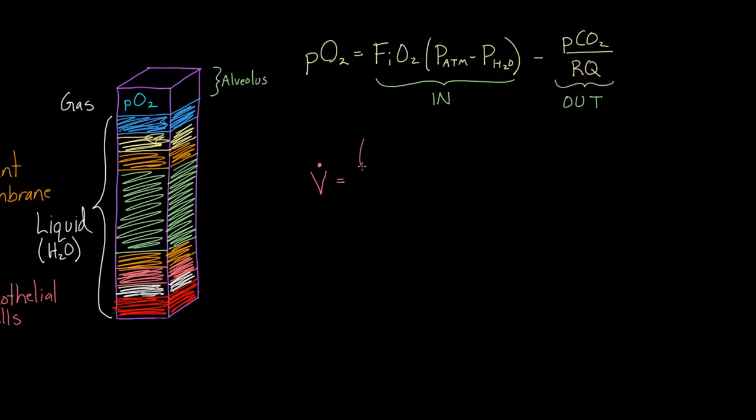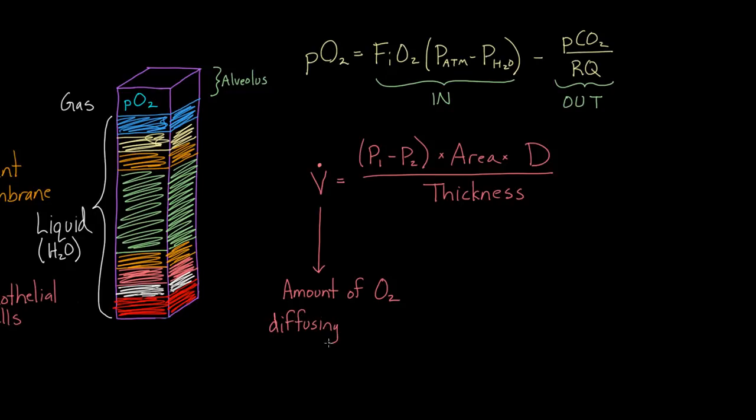We have this second equation which helps us figure out how much oxygen is going to diffuse, or any molecule really, according to this formula. This is Fick's law. We can figure it out by taking a few parameters. If you know that the gradient P1 minus P2 is a certain amount, and if you know the area and the diffusion coefficient and the thickness, then you can figure out V. This V is the amount of oxygen diffusing over time. This is actually very helpful.